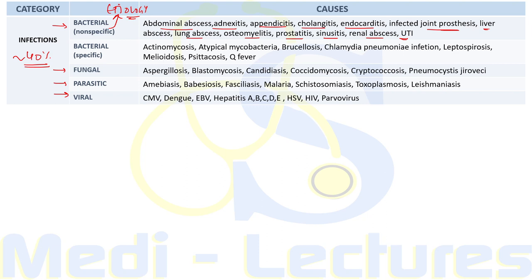Fungal infections causing PUO include aspergillosis, blastomycosis, and candidiasis. Parasitic causes include amoebiasis, fascioliasis, malaria, schistosomiasis, and toxoplasmosis. Viral causes include CMV, Epstein-Barr virus, hepatitis A, B, C, D, E, and parvovirus. Culture-negative endocarditis may be due to difficult-to-culture bacteria such as nutritionally variant bacteria, HACEK organisms, Coxiella burnetii, Tropheryma whipplei, and Bartonella species.